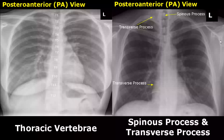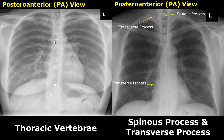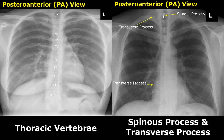We can also see the thoracic vertebrae and their parts. Here are all of the 12th thoracic vertebrae; they are barely seen behind the heart. Here we can see the 12th thoracic rib coming off the 12th thoracic vertebra. The spinous process can be seen at the center of the vertebra with a vertical orientation. We can also see the transverse process right next to the vertebral body and slightly below the rib.